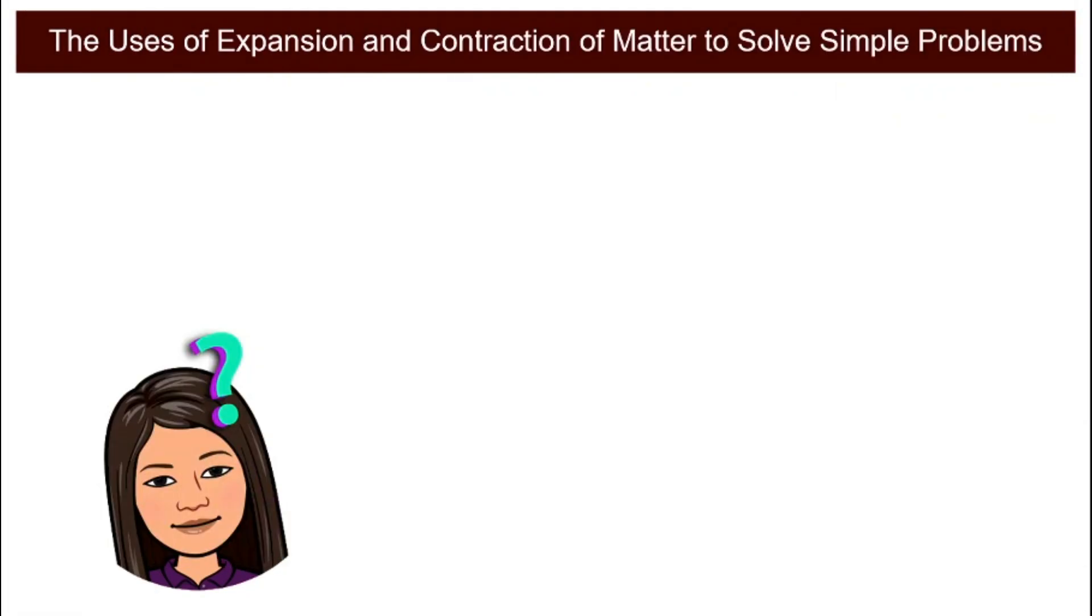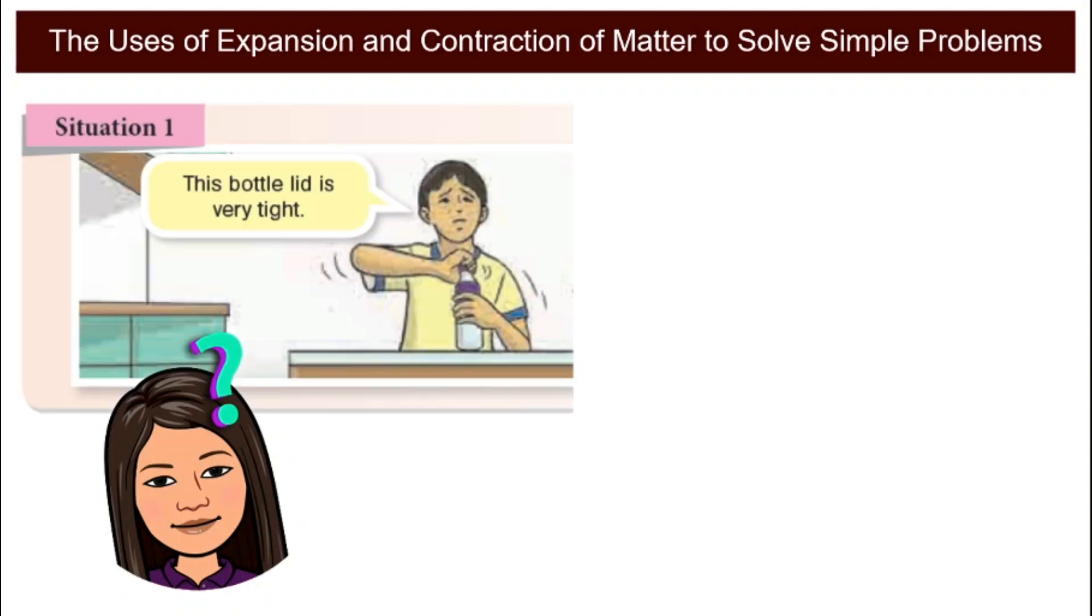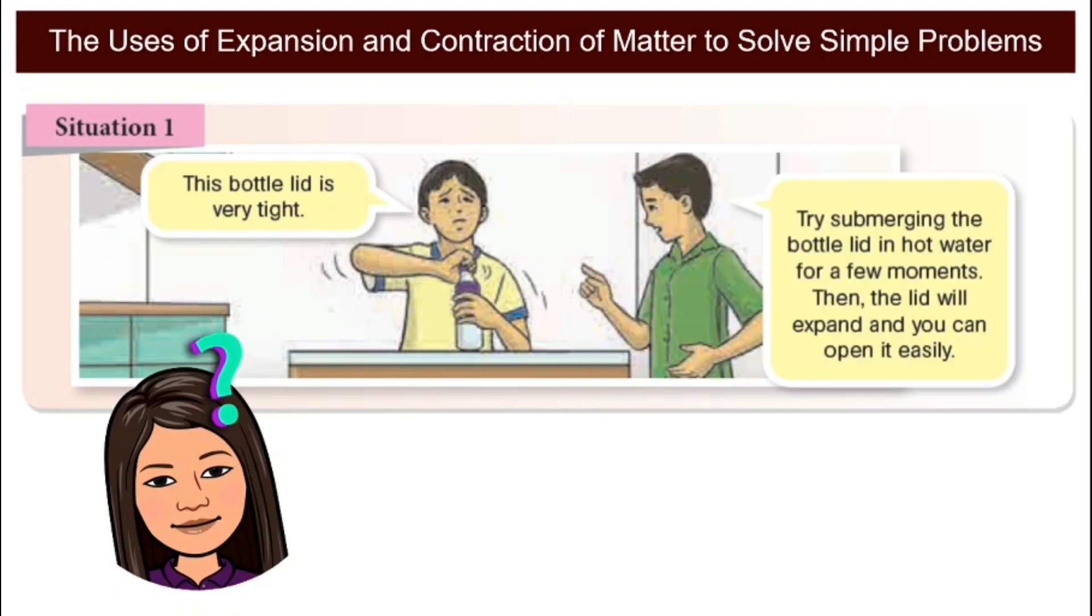What are some of the uses of expansion and contraction of matter that can help to solve simple problems? I'll show you two situations. First, if you have a bottle with a very tight lid that you find hard to loosen, you can try and submerge the lid in hot water. Why? Because when it is hot, expansion happens. So if the lid expands, it will become looser and easier for you to open it.